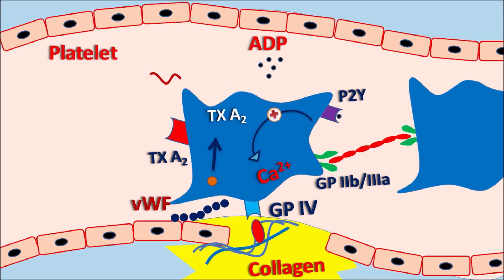Similarly, thromboxane A2 synthesized acts on thromboxane A2 receptors, which further increases platelet aggregation. In this way, platelets aggregate and form a clot along with a fibrin mesh, thereby preventing blood loss. So what are the drug targets acting as antiplatelets? The platelets are aggregated by important mediators like thromboxane A2, ADP, as well as GP2B/3A receptors. Drugs can act on these targets to produce antiplatelet action.